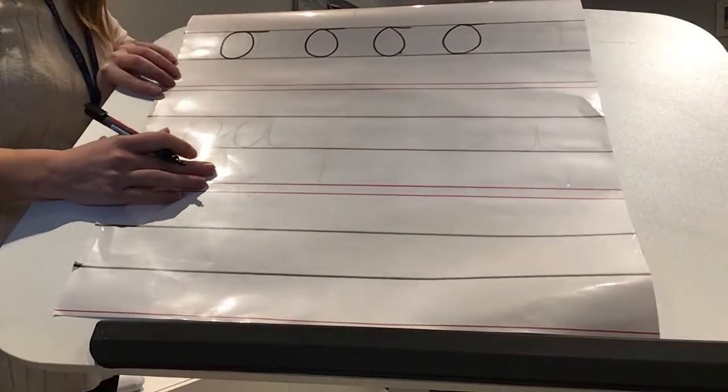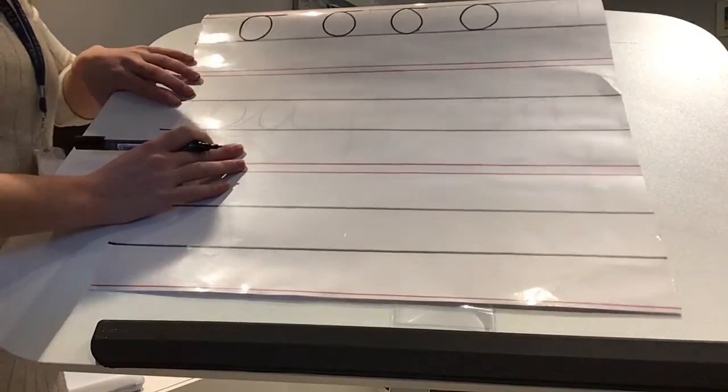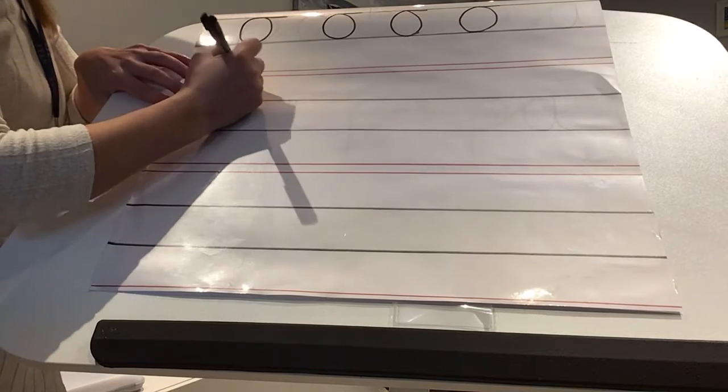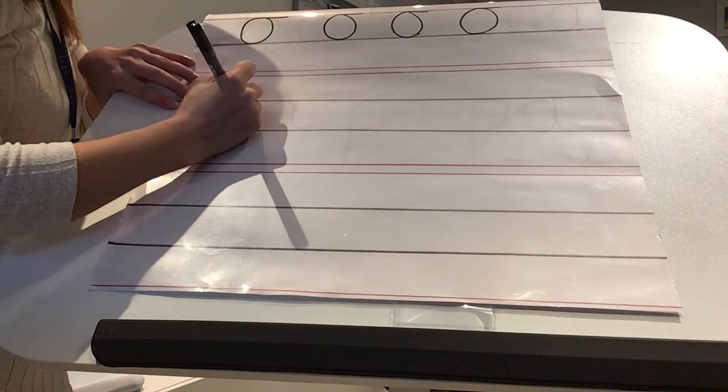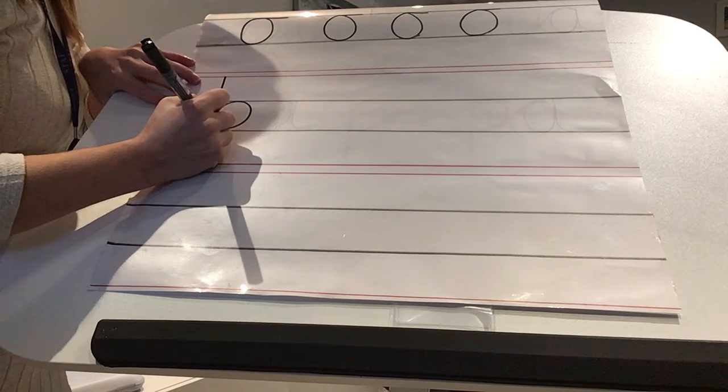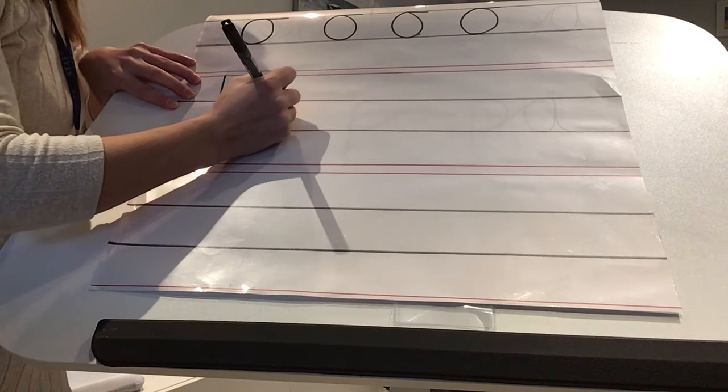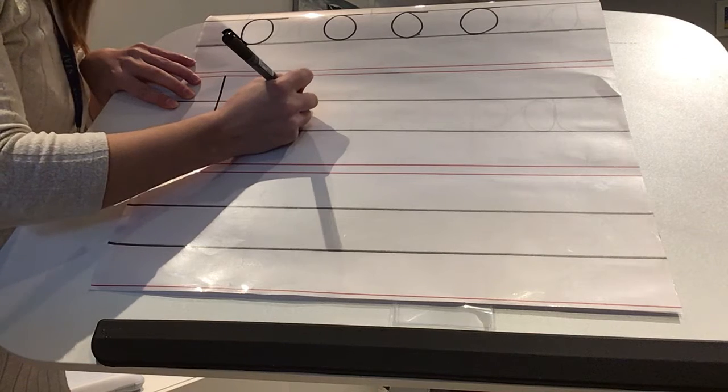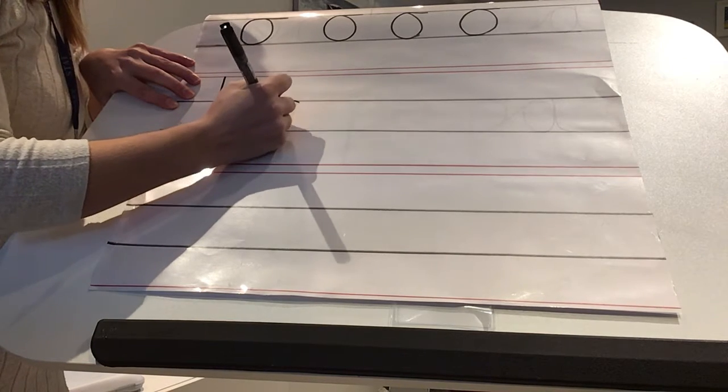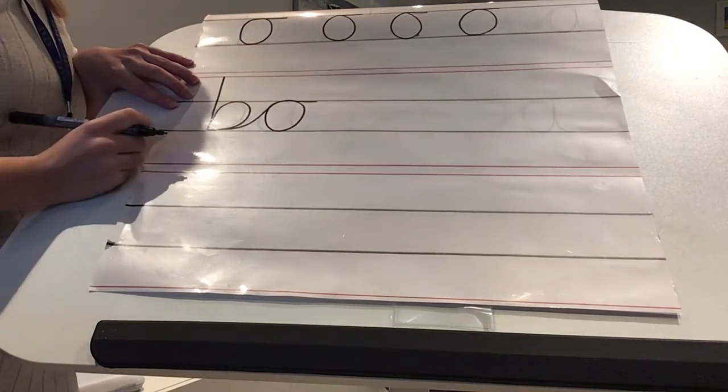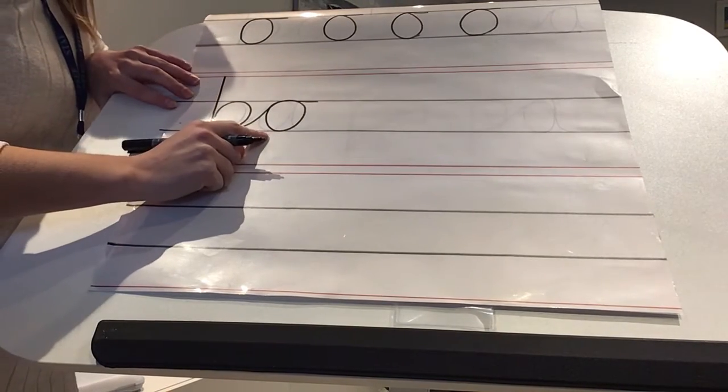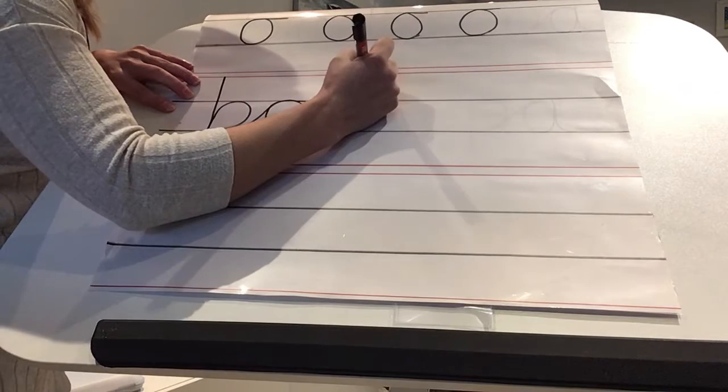Now if I'm going to join B to O, I need to form my B down from the red line, over. Now this is the tricky bit. Coming out of the B, start going clockwise, but then you've got to change direction and then lead out across the top. The lead out is what makes the O different to your letter A.